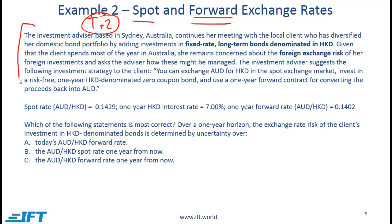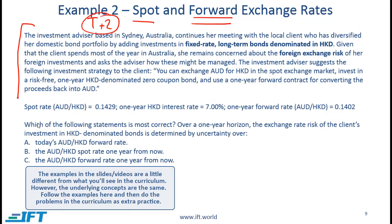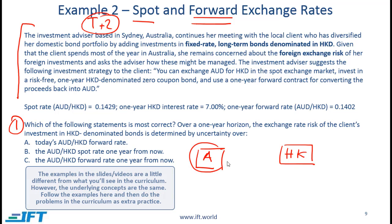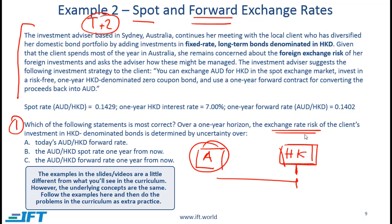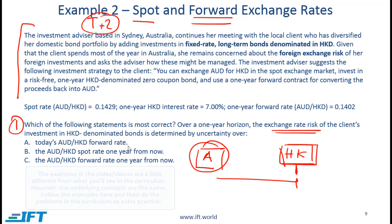This is Example 2 from the curriculum and there are several questions we will go over. Our client is based in Australia and has invested in a bond denominated in Hong Kong dollars; the client wants to liquidate at the end of one year. From an exchange rate risk perspective, what is the client concerned about — today's forward rate, the spot rate one year from now, or the forward rate one year from now?